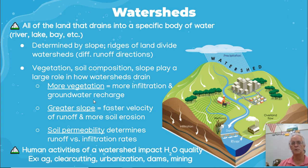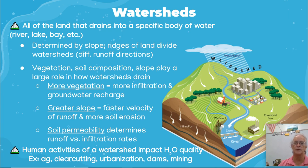Human activities within a watershed impact water quality. For example, if we cut all the trees, we'll learn more about that. Urbanization creates impermeable surfaces, so water is going to run off faster. Dams, mining, etc. also have impacts.